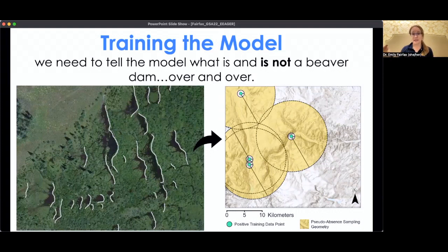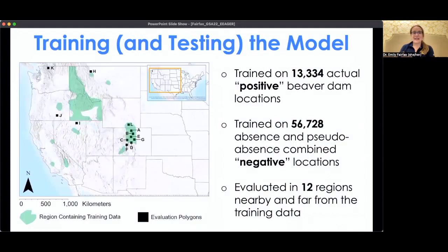To do this, we did have to thoroughly map our landscapes. We couldn't just find a handful of beaver dams and call it good. We'd draw a pretty big polygon, hand-map everything within it, so that we could be confident that areas not in the actual positive points were a safe bet to not contain real beaver dams. Our training data is highlighted here with greenish shading — drawn heavily from Idaho and Colorado, with a few more patches around the American West. In total, we used a little over 13,000 actual beaver dam locations and about 57,000 absences or pseudo-absences for our negative data.